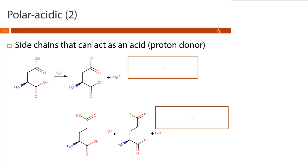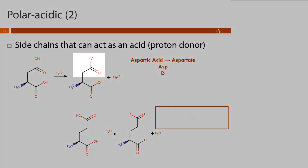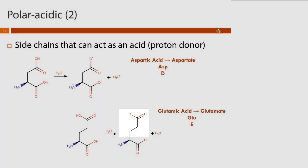Our next group are the polar acidic amino acids — these have side chains that can act as a proton donor. Aspartic acid has a two-carbon carboxylic acid side chain; in its conjugate base form it's called aspartate; three-letter code ASP, one-letter D. Glutamic acid has a three-carbon carboxylic acid side chain; in its conjugate base form it's called glutamate; three-letter code GLU, one-letter E.